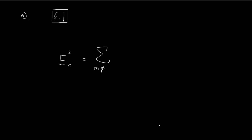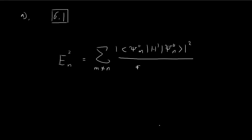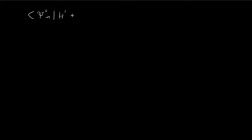That involves using this formula. Let me copy out the formula for the second order correction to the energy levels. What we're going to be doing is applying this formula directly to the situation in problem 6.1. First of all, let us focus on the numerator term. The numerator involves this inner product — we take the nth stationary state, apply the perturbation, then apply it to the mth stationary state.